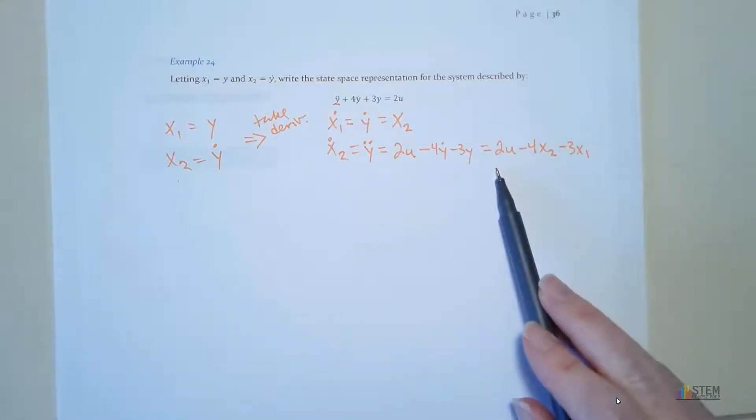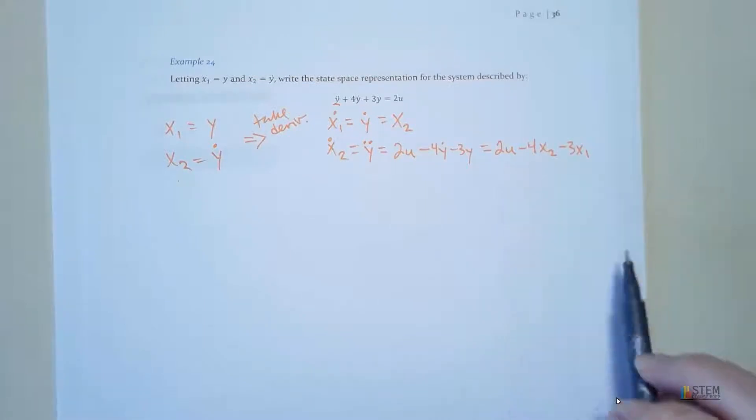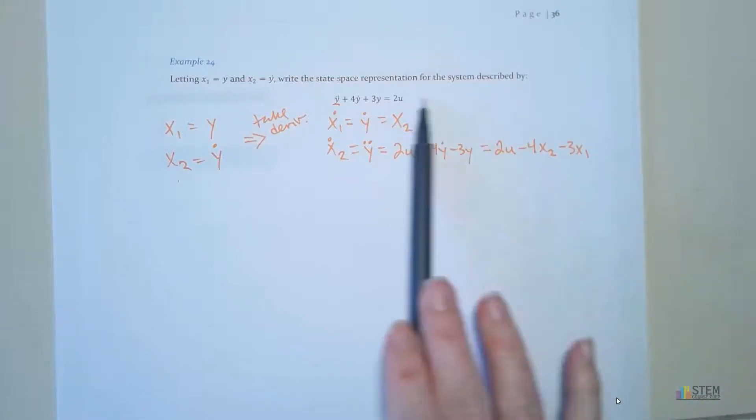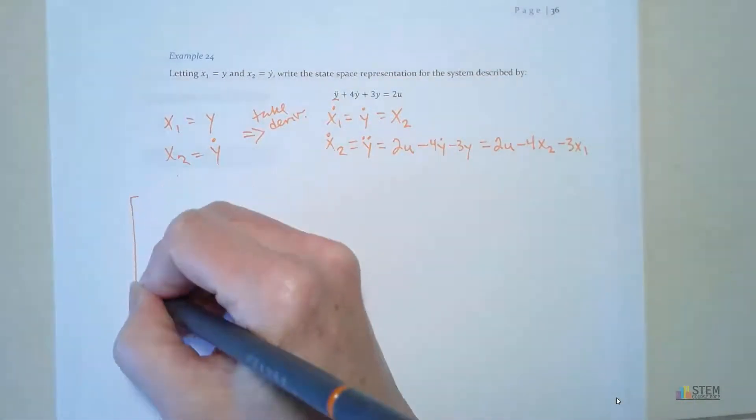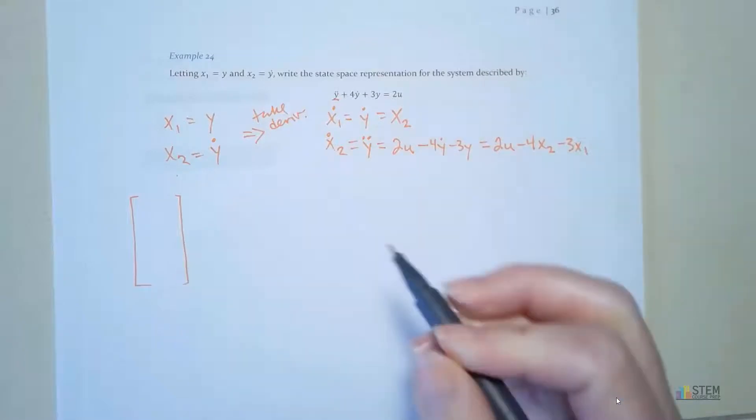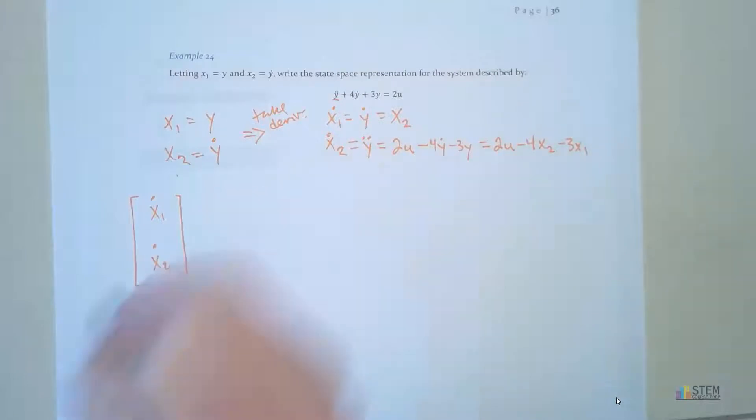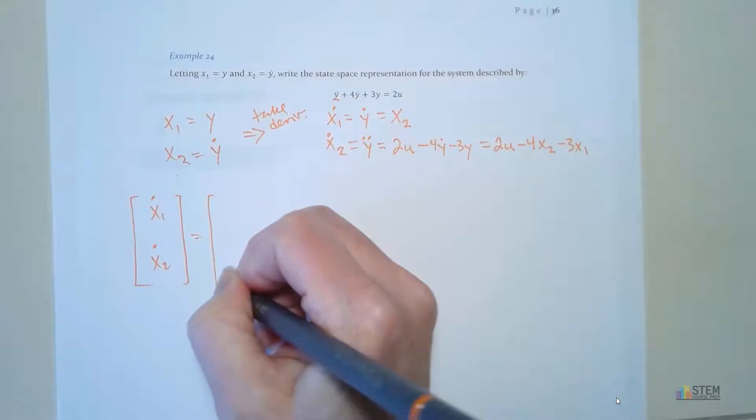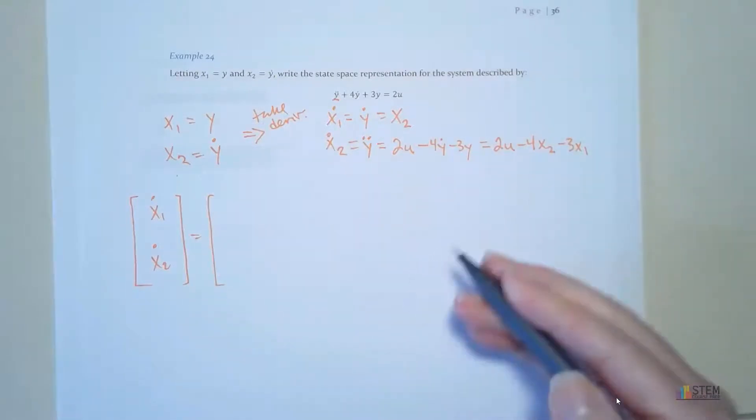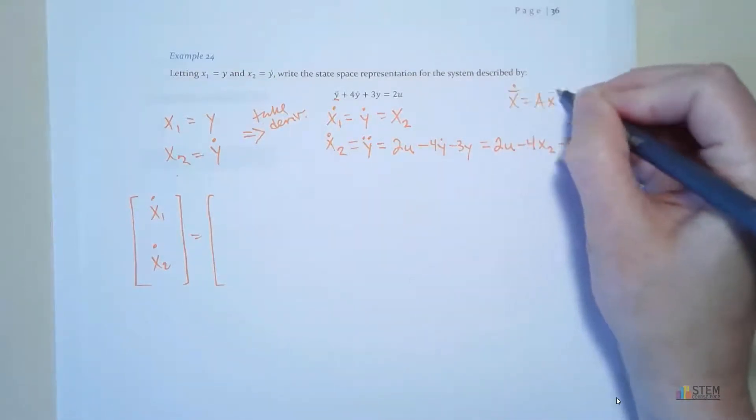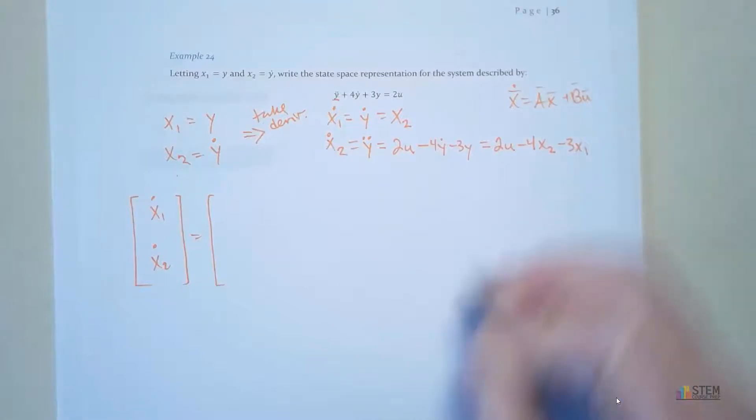So now that I'm at this point, I can go ahead and do the matrix form. So that's what we'll do next. Basically, we want to write this in matrix form. That's all we're going to do. So let's do the left-hand side first. So we've got these two right there. So x1 dot and x2 dot. And then that's got to equal our matrix A. Because remember, we had x dot equals ax plus b times u.